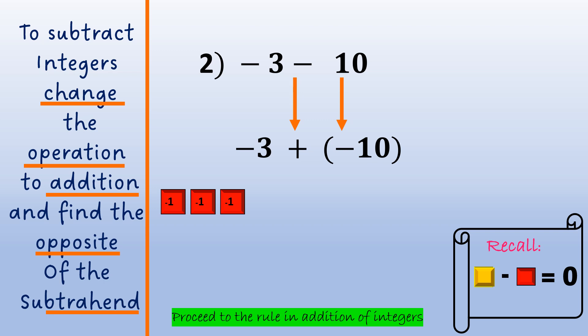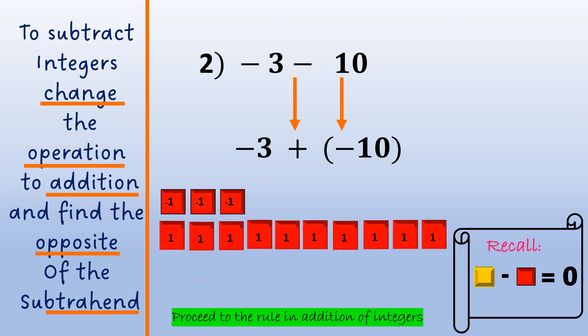We have 3 red tiles to represent negative 3 and 10 more red tiles to represent negative 10. Since all of them are red tiles, we will just add them together. So we have 13 red tiles. Therefore, negative 3 plus negative 10 is equal to negative 13, and negative 3 minus positive 10 is equal to negative 13.